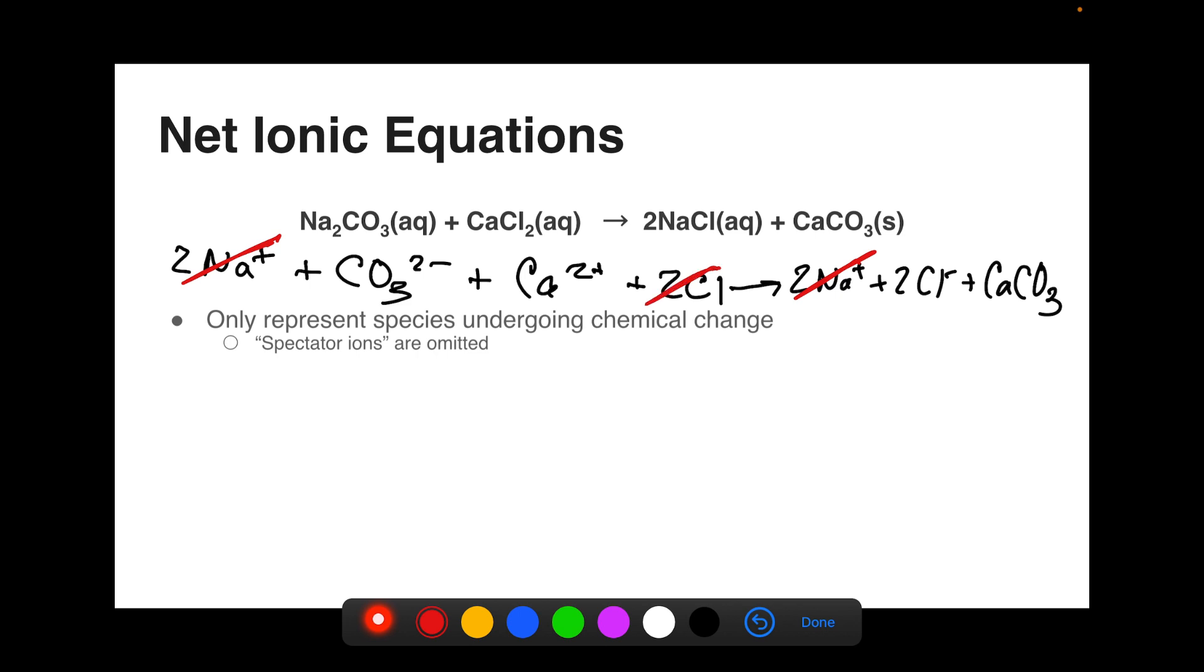Likewise for the chlorides. Two chloride ions here, two chloride ions here. So I'm going to eliminate those two. What's left then is our net ionic equation. Notice that we have the two ions that combine to form our solid product.